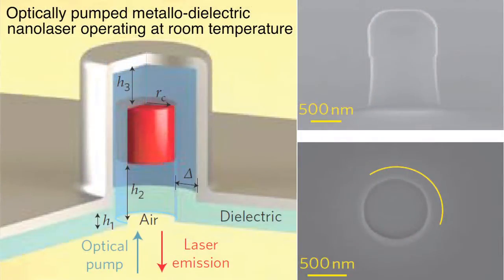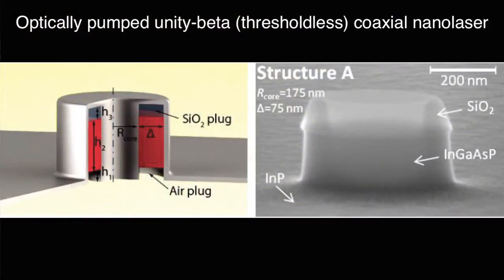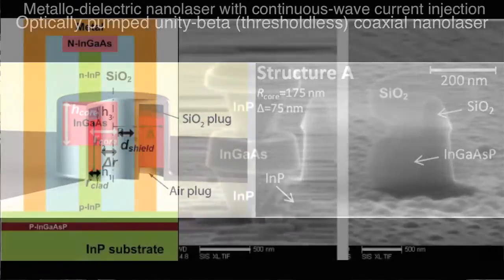In the past we've realized one optically pumped nanolaser of this type that operates at room temperature. We've also realized one that's a coaxial design that's really high efficiency and what we call a thresholdless nanolaser about two years ago.